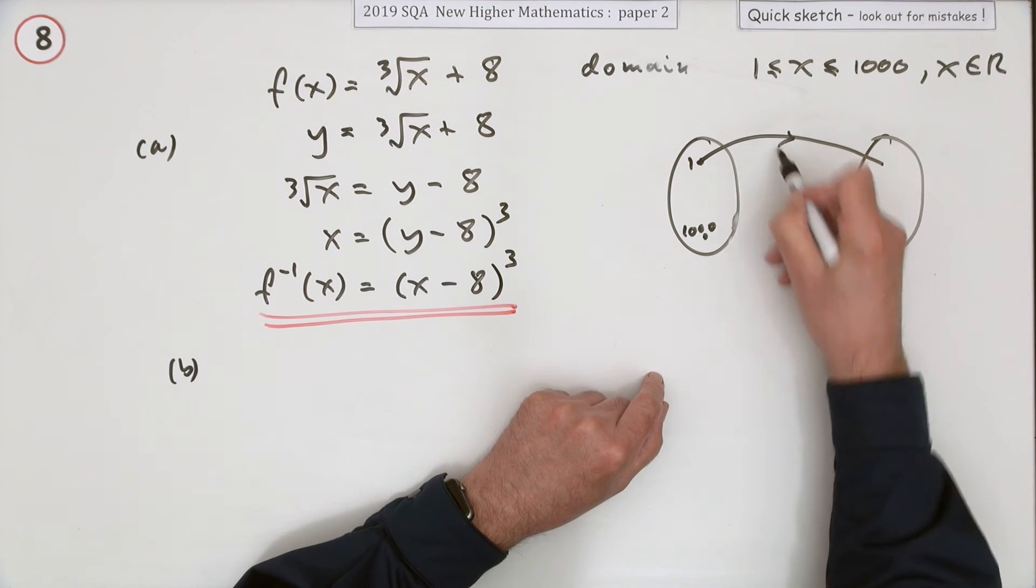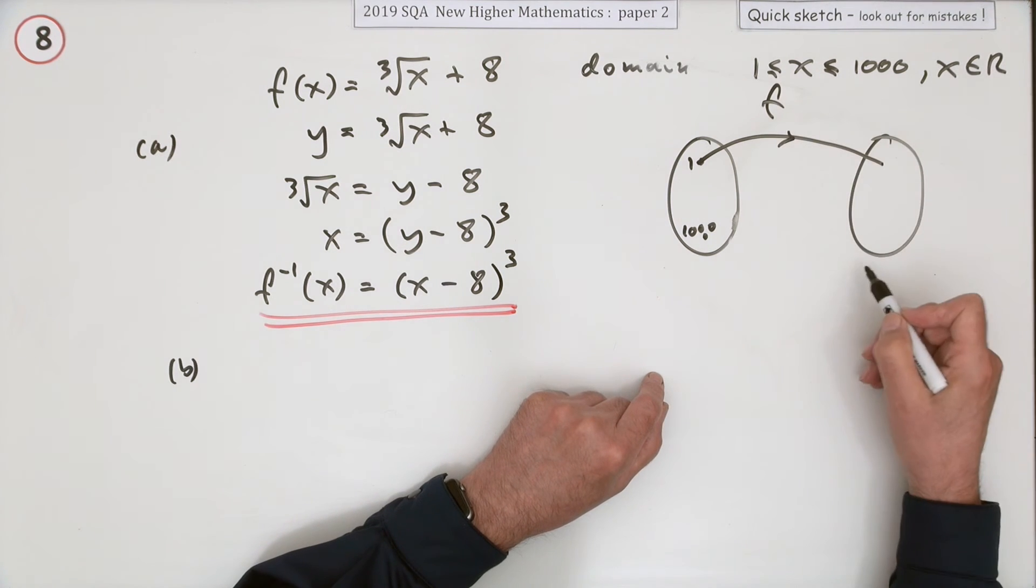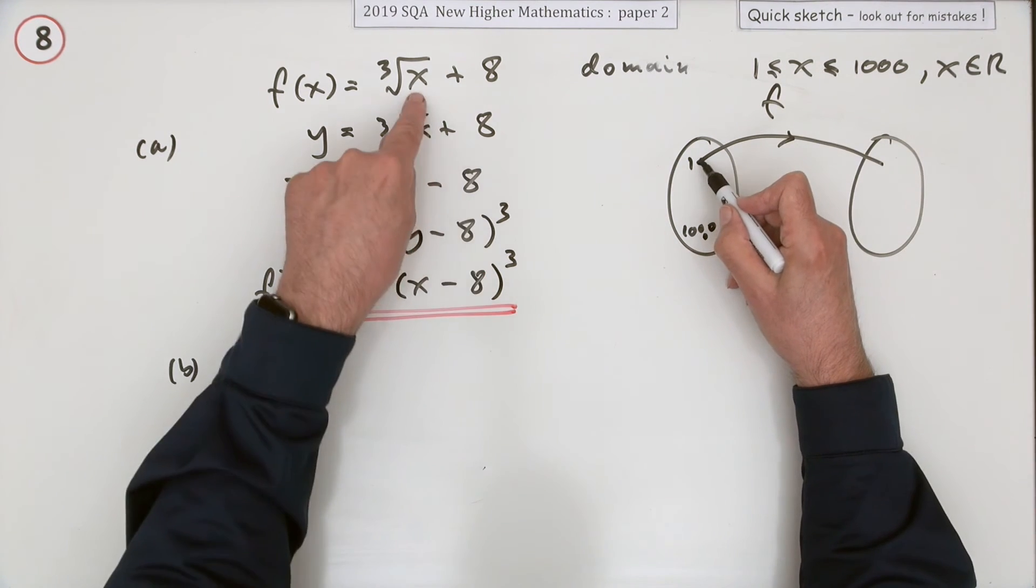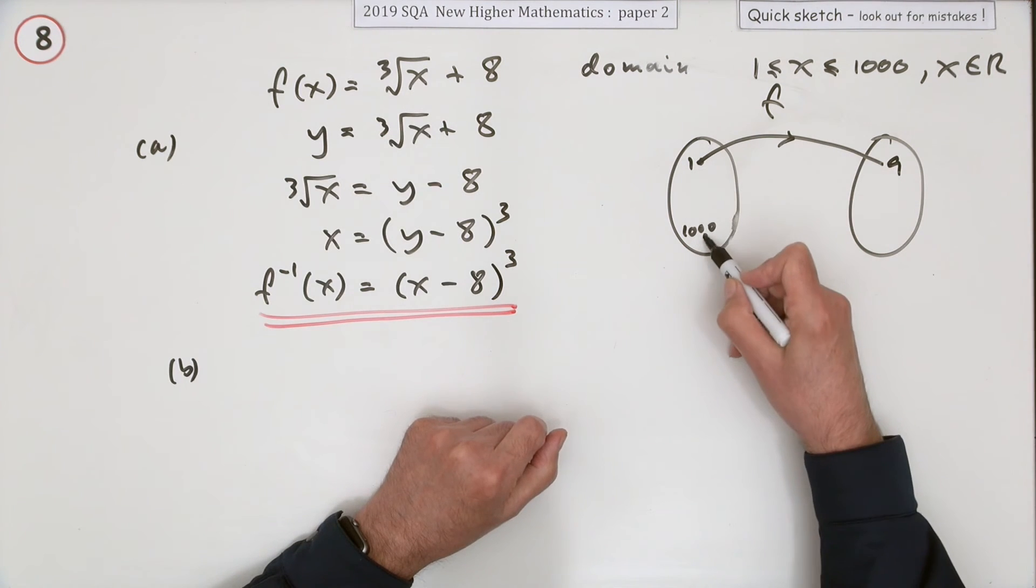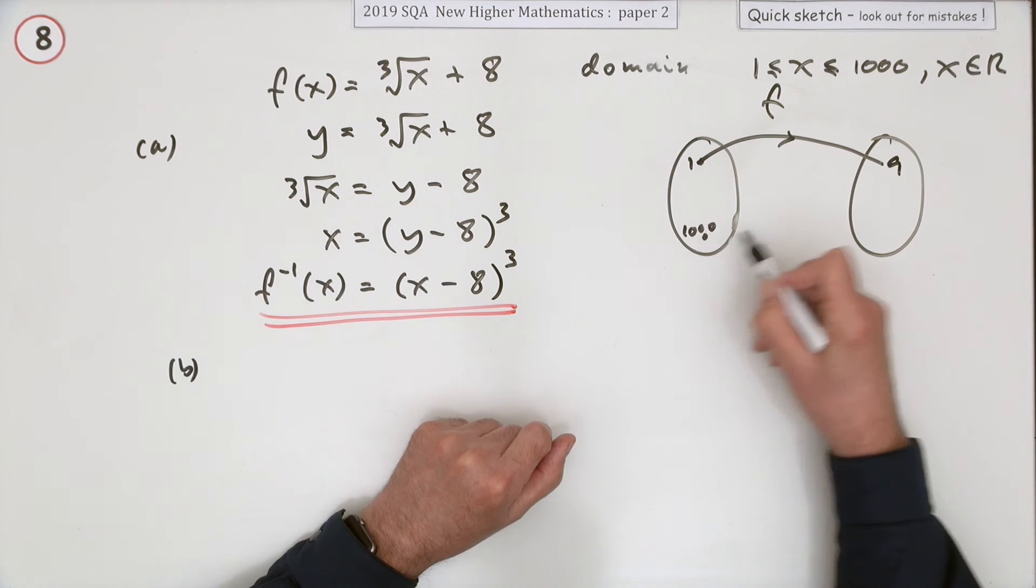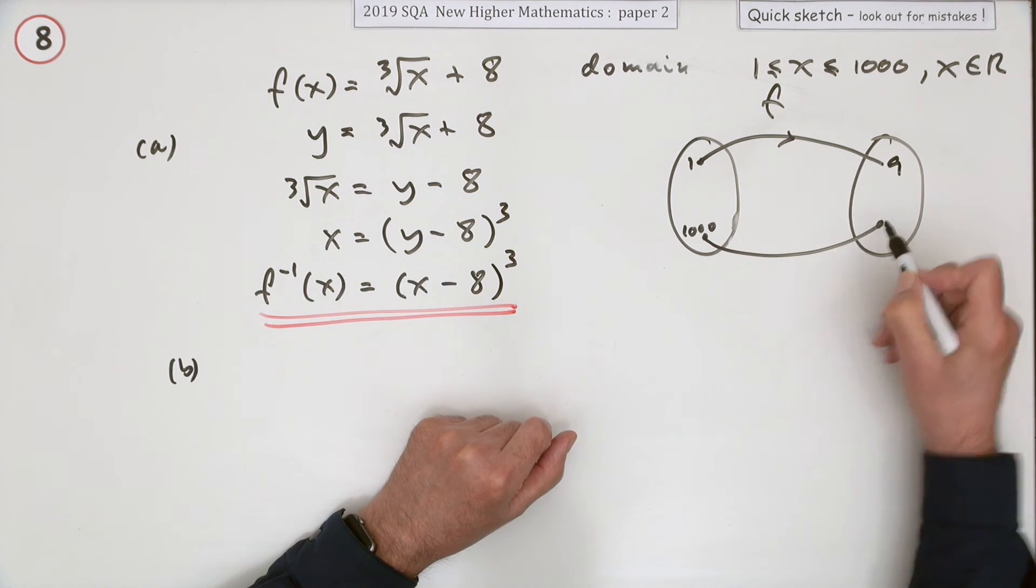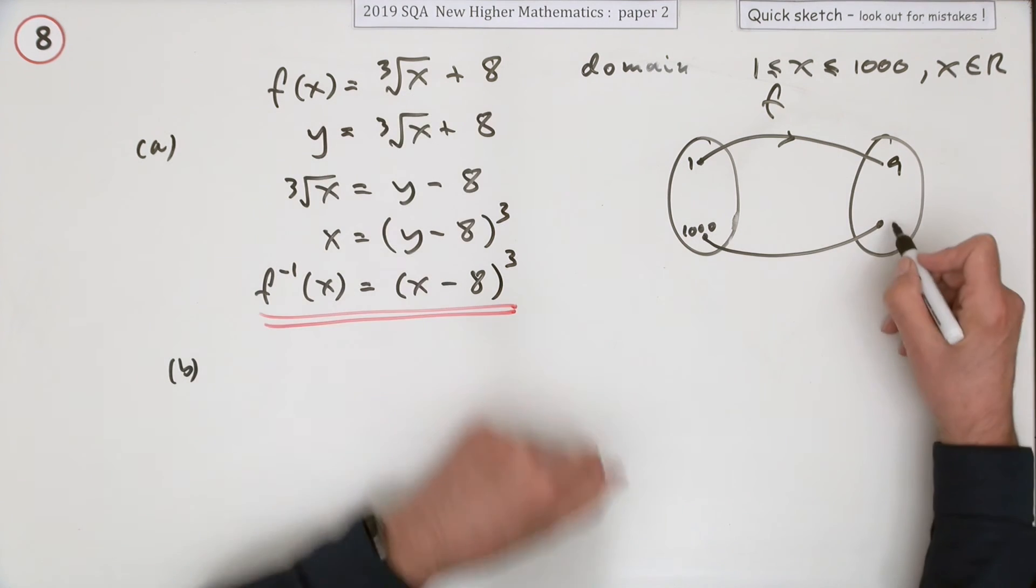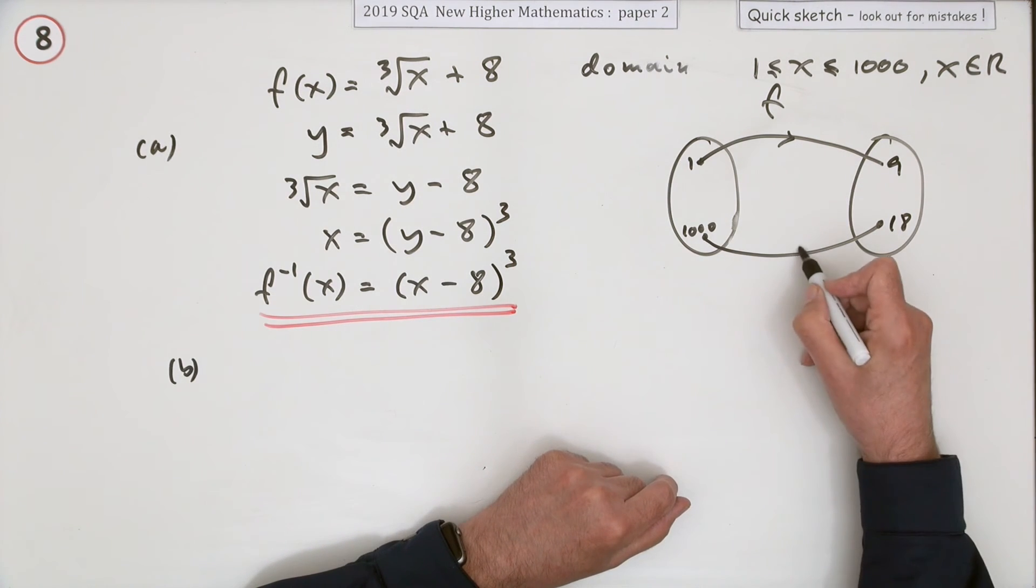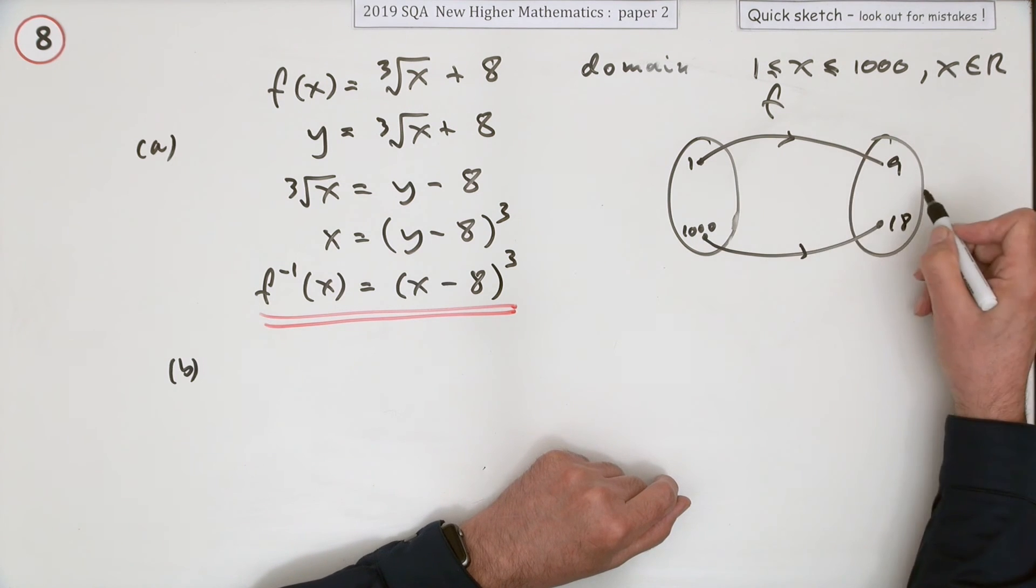For each of those it produced an answer following the rule f. So 1 for instance became 9, and it would increase gradually until you got to 1000, and the answer for 1000 would have been the cube root of 1000 which is 10, plus the 8 making 18.